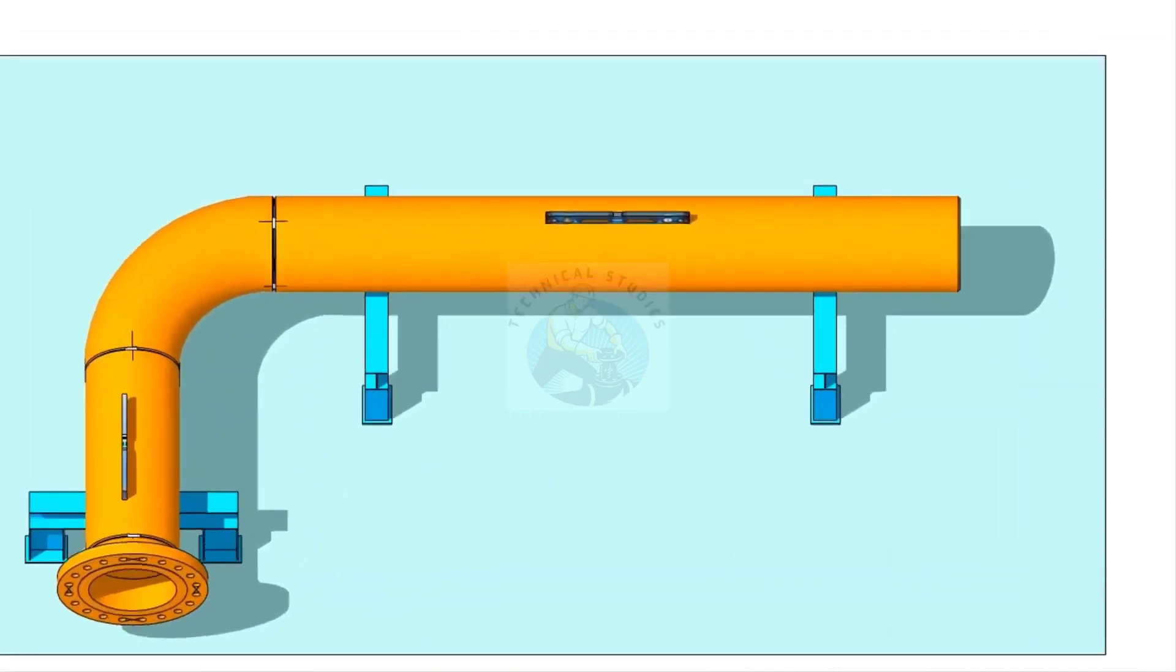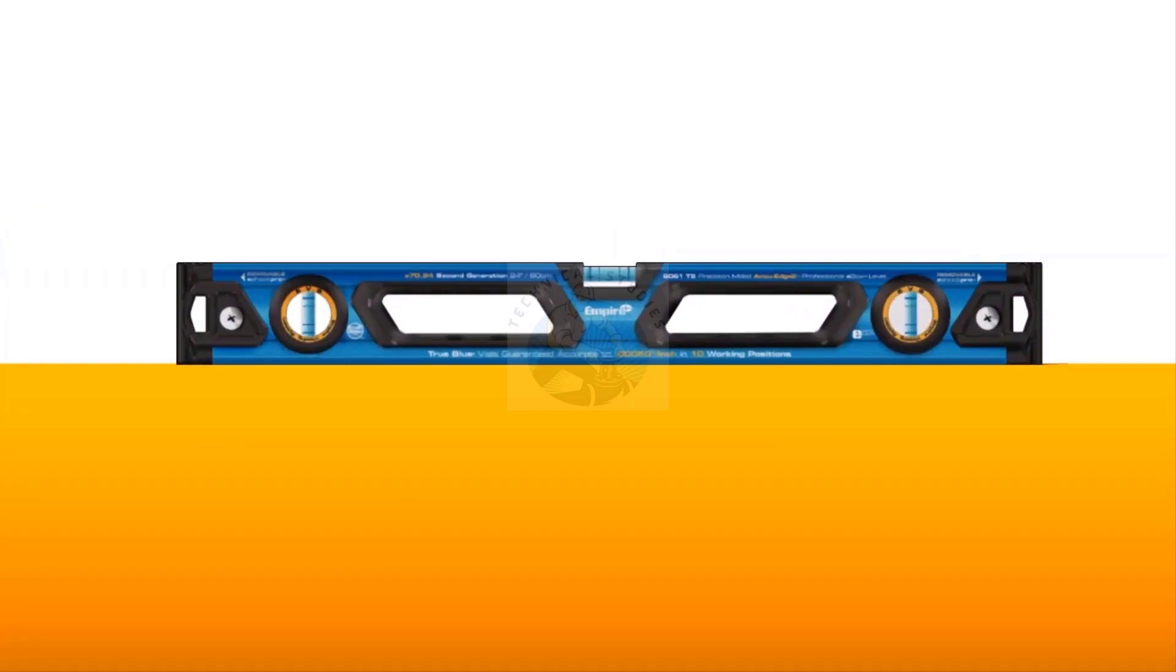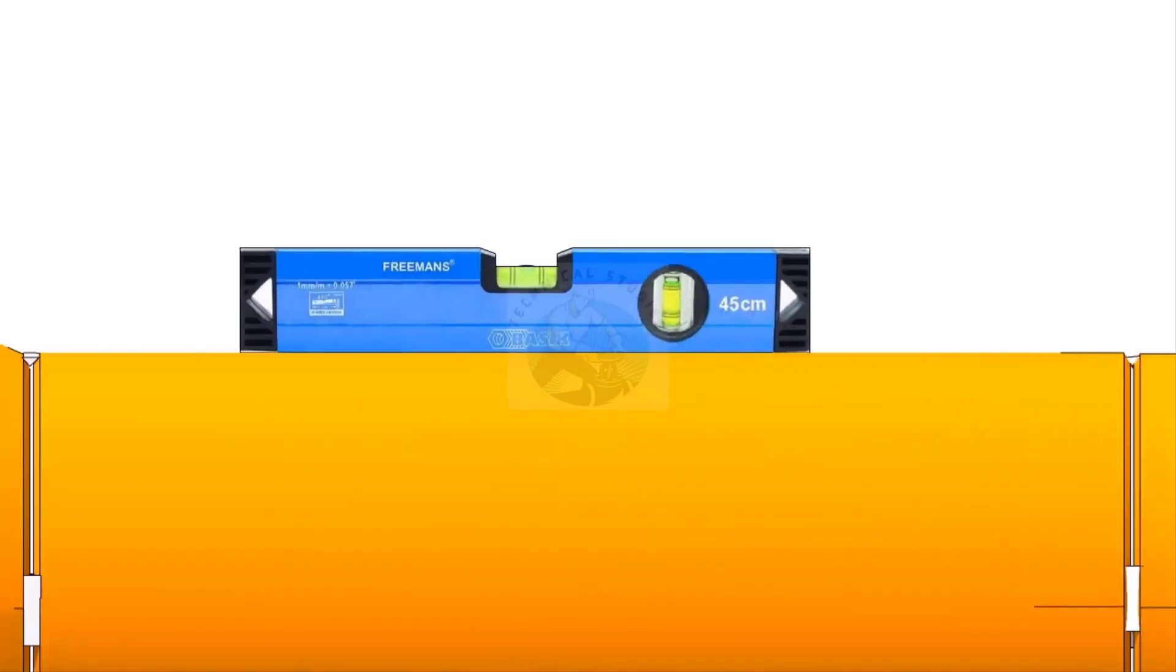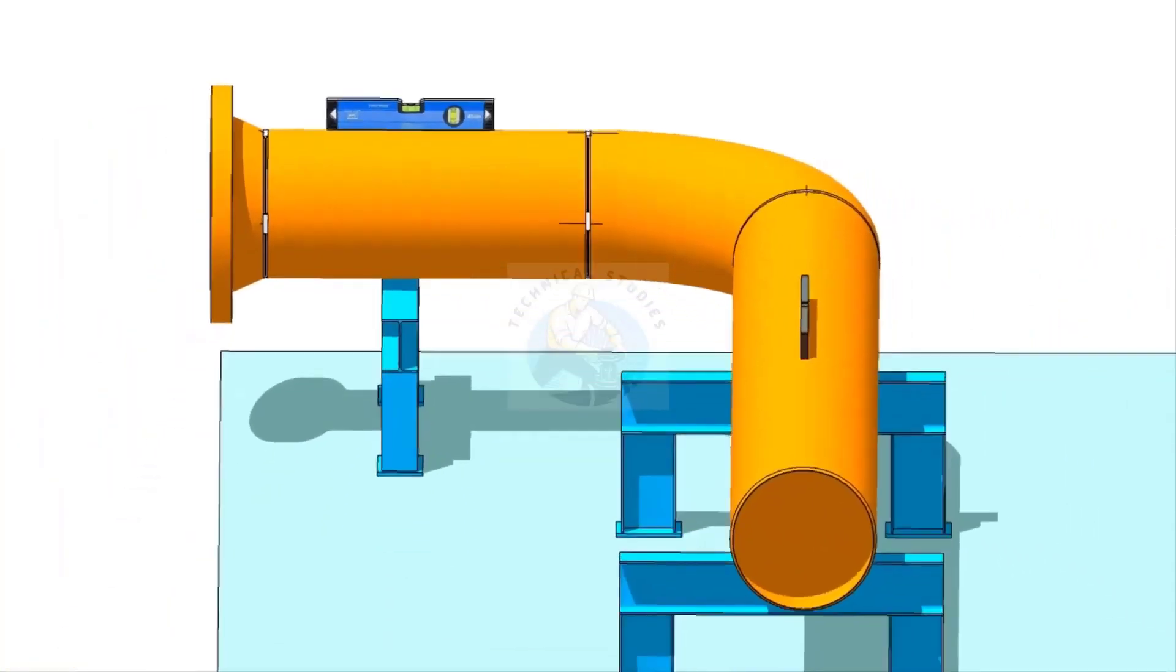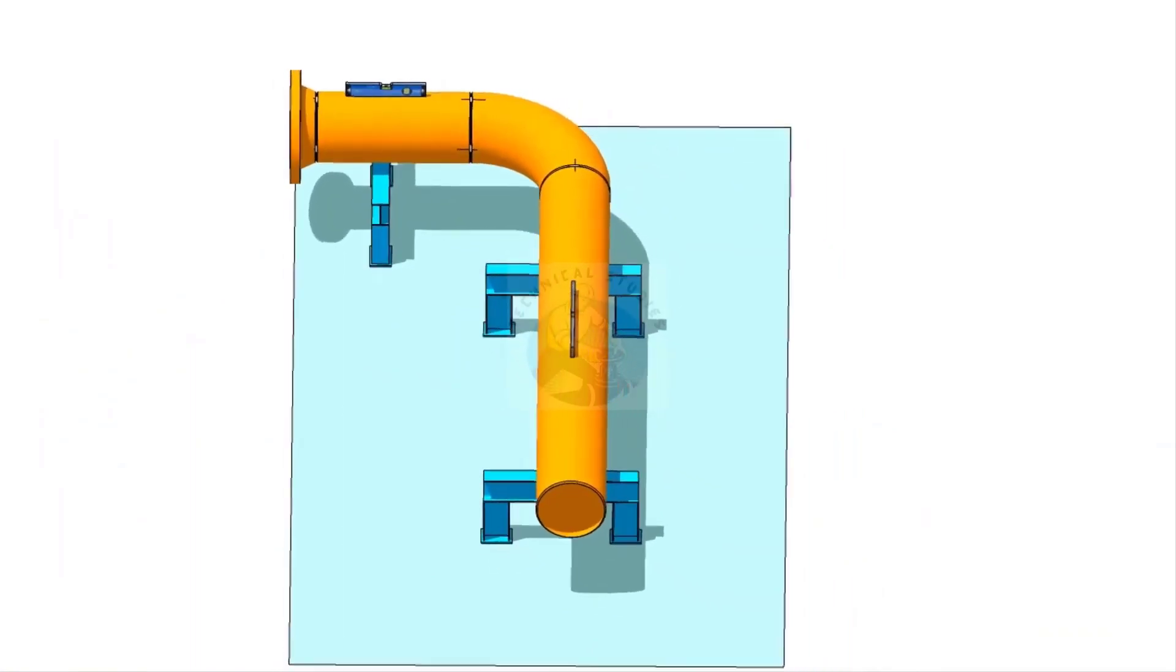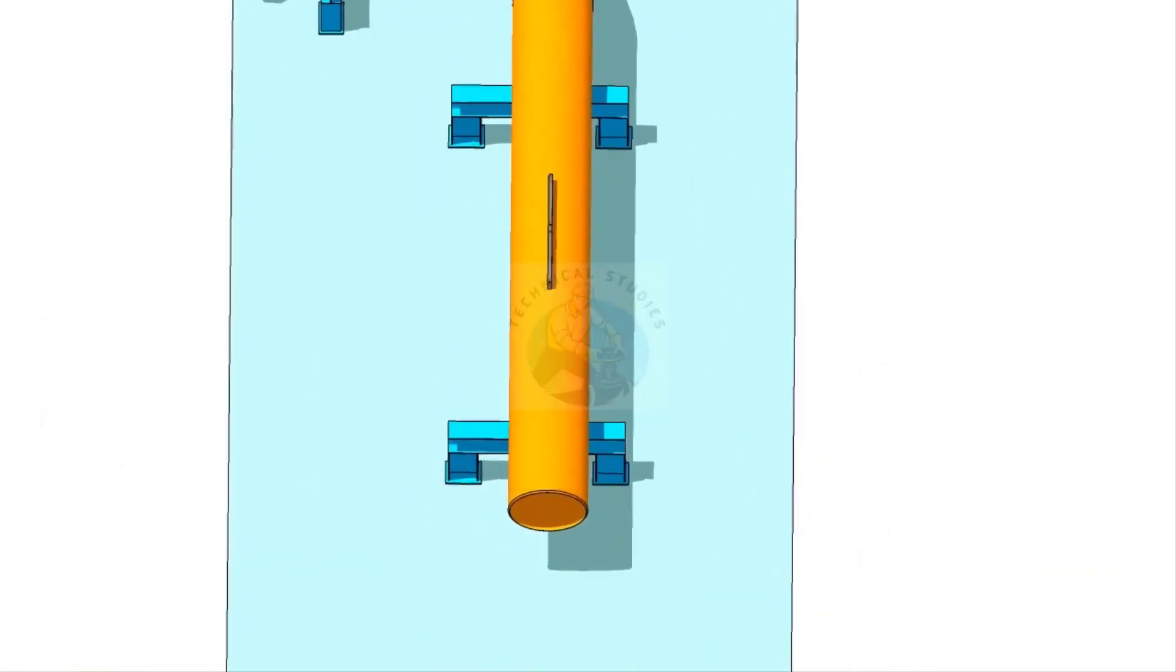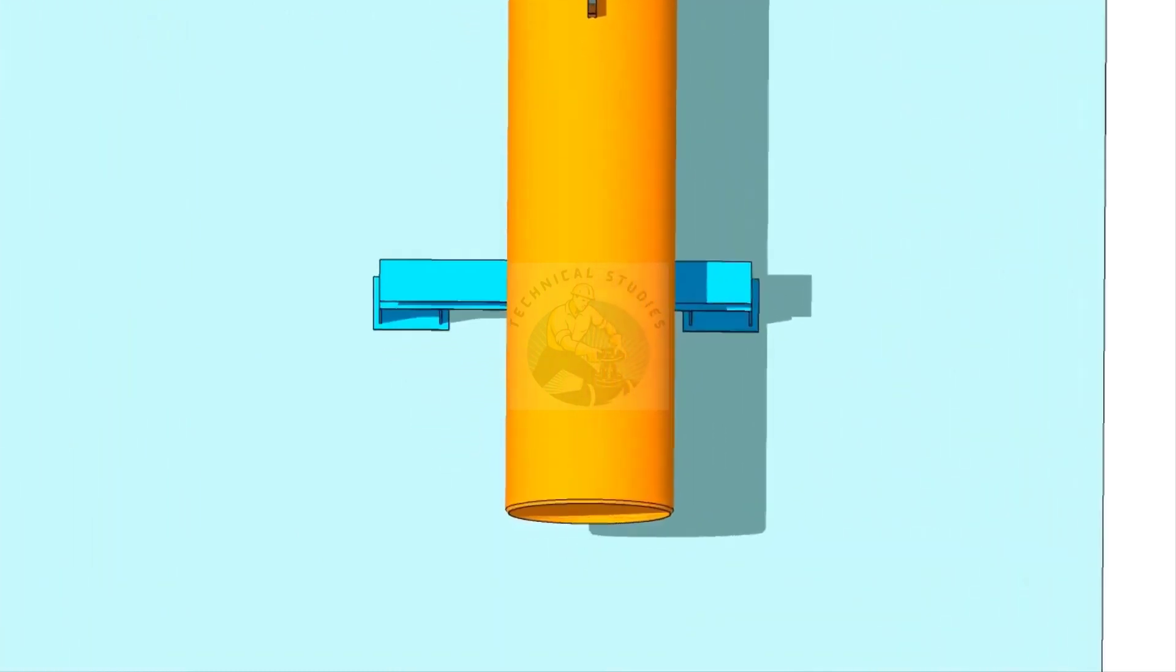Now, go to the existing spool, check the level, and correct it. Mark the zero degree.